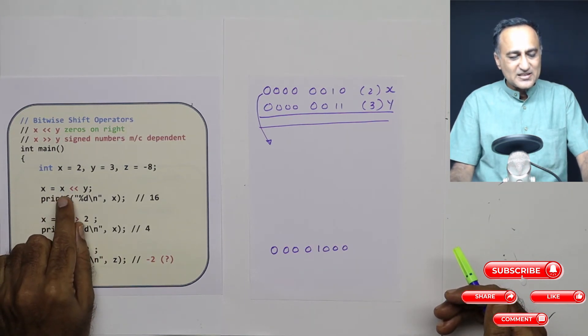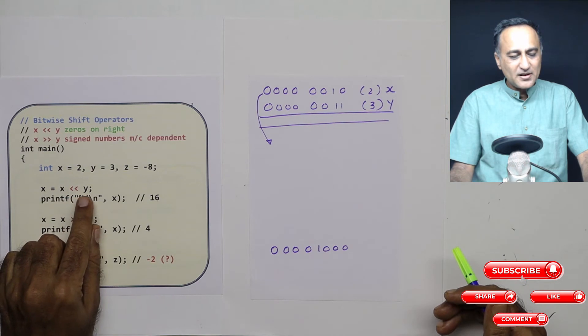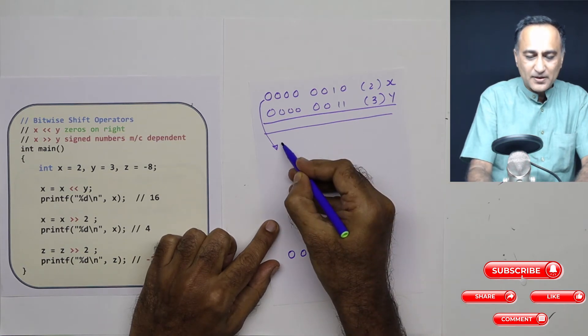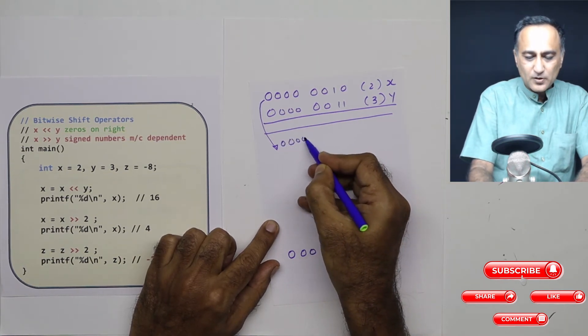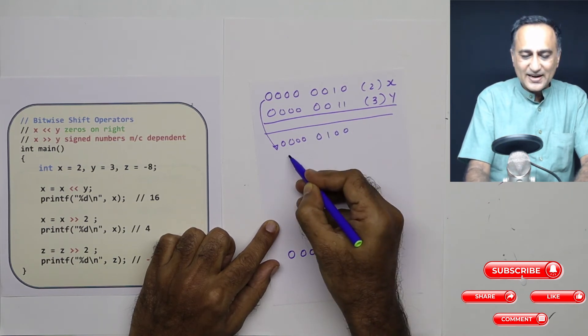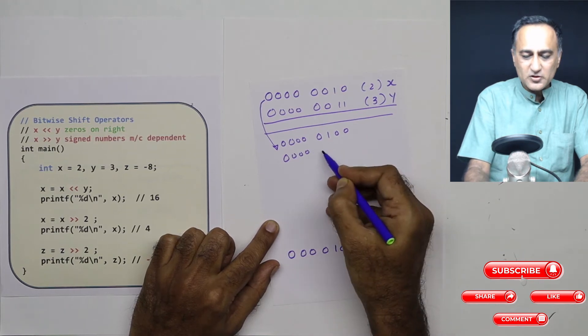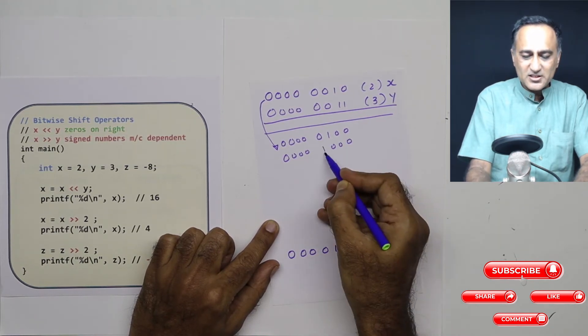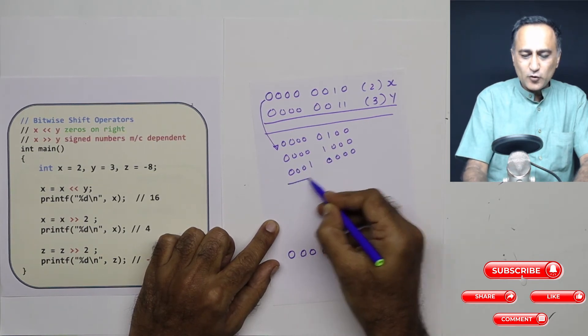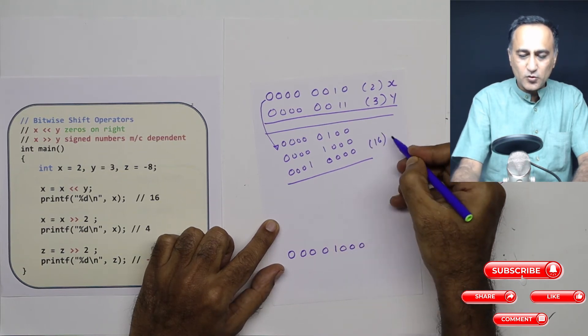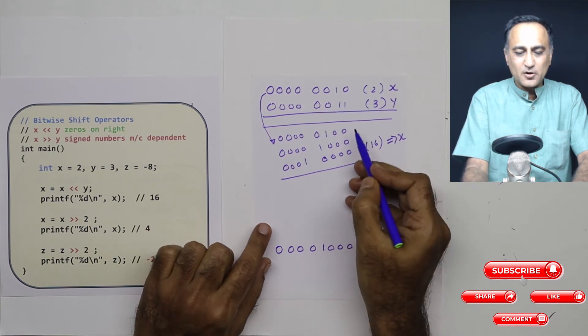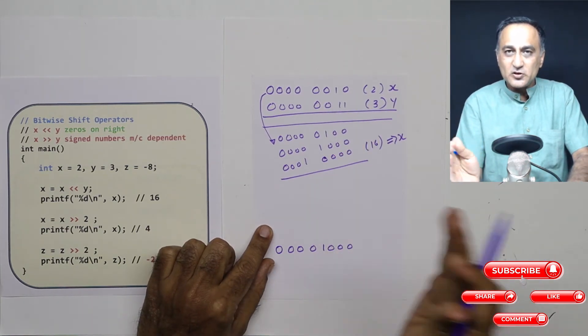I've taken x and I'm shifting it by three bits to the left. In the first step, this bit will move here, so this is going to be one zero - one bit has moved. In the second step, the bit is going to move one more place. In the third step, this one is going to come here, everything else is going to be zeros. If you convert this number into decimal, this is going to be equal to 16. This is the new value of x, so x now is 16 because x was shifted by three bits to the left.